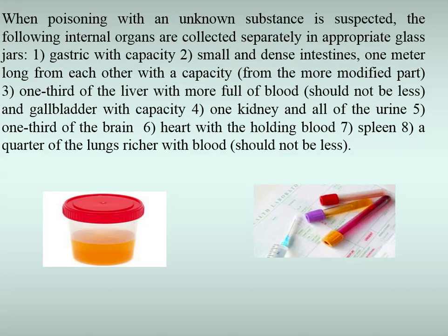During forensic chemical examination of exhumed remains, the following additional material evidence is added: soil samples taken from six areas of the grave, each weighing one kilogram, taken directly under the coffin, from the top side, two from the sides, and two from edge areas. Items in the coffin and wooden parts under the coffin are also sent for research. Corpse parts, internal organs, and other material evidence are sent in clean, dry, wide-necked glass jars, each separately.